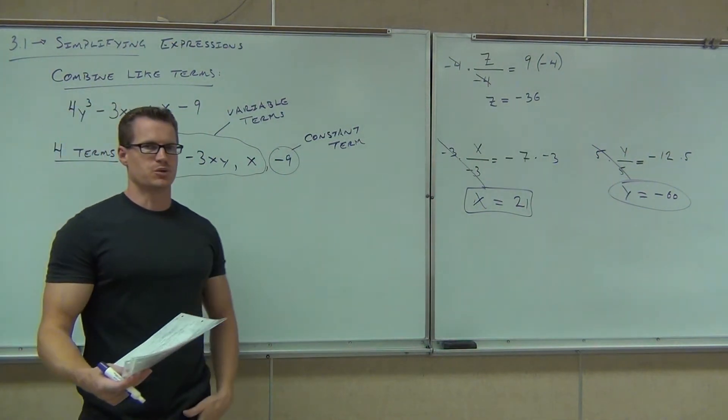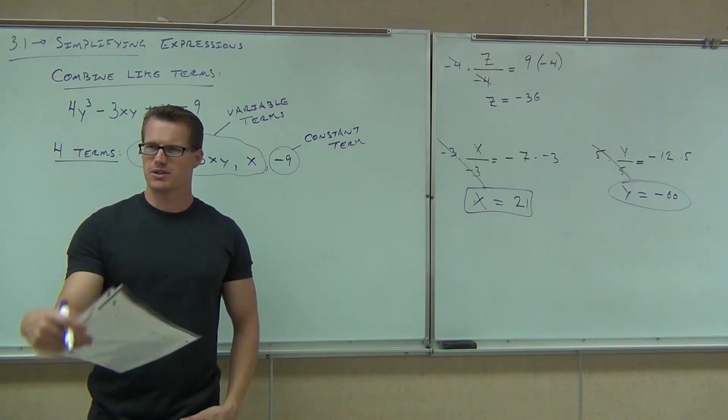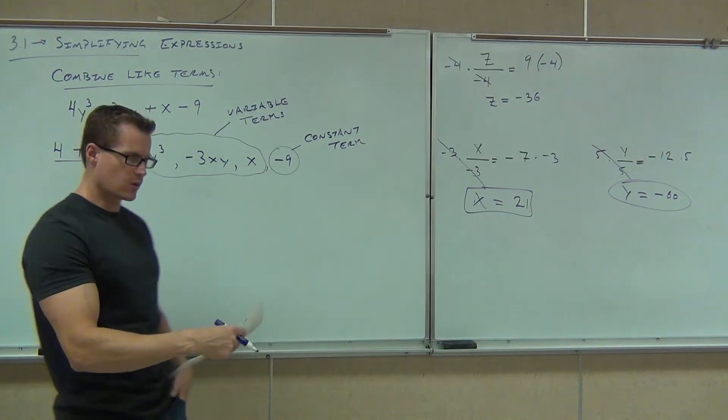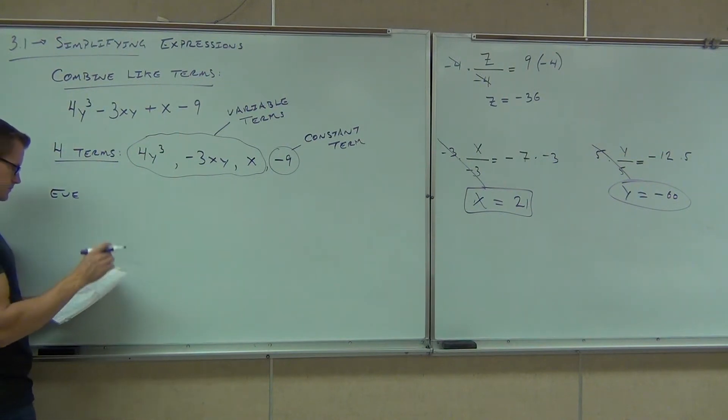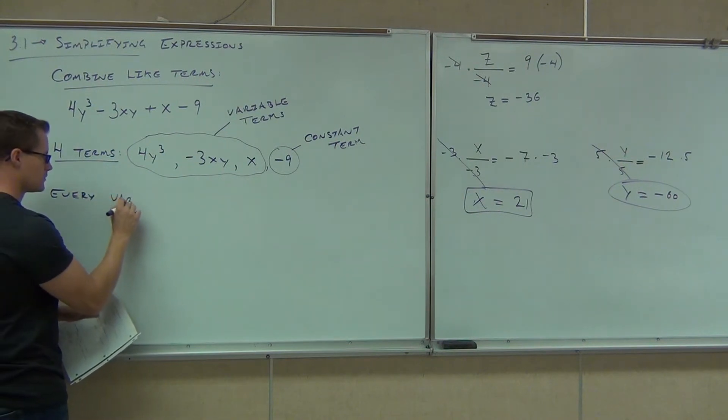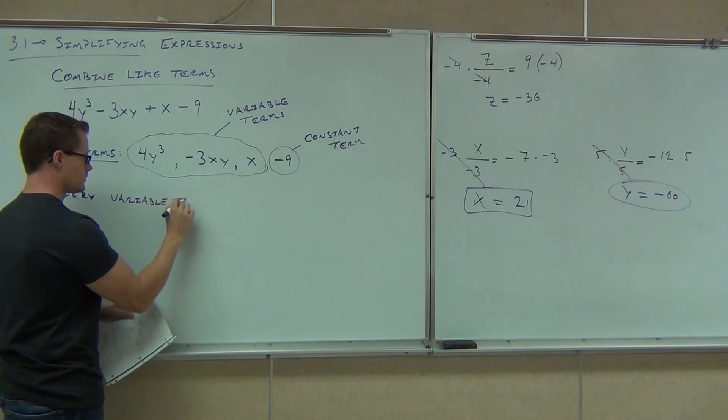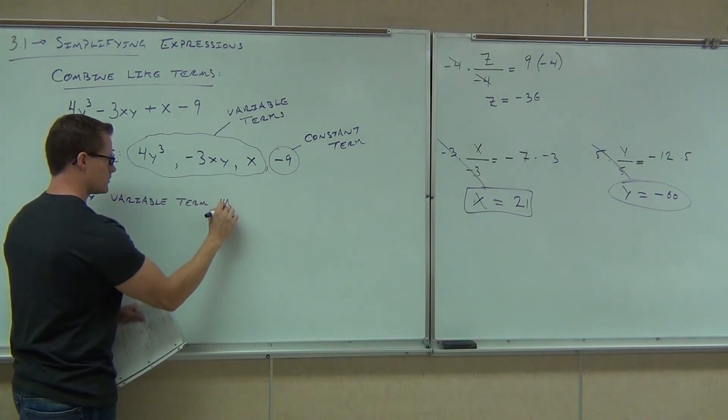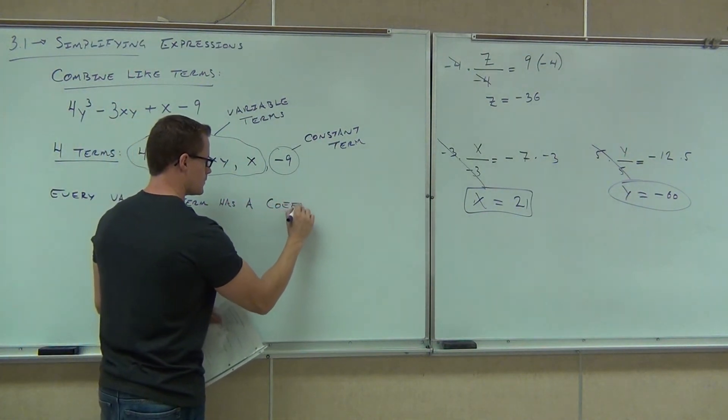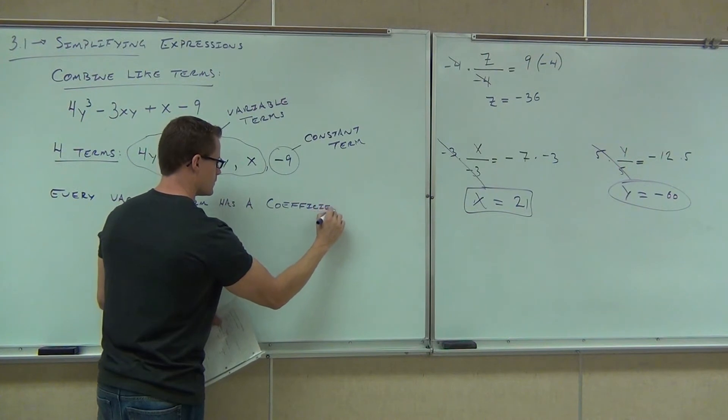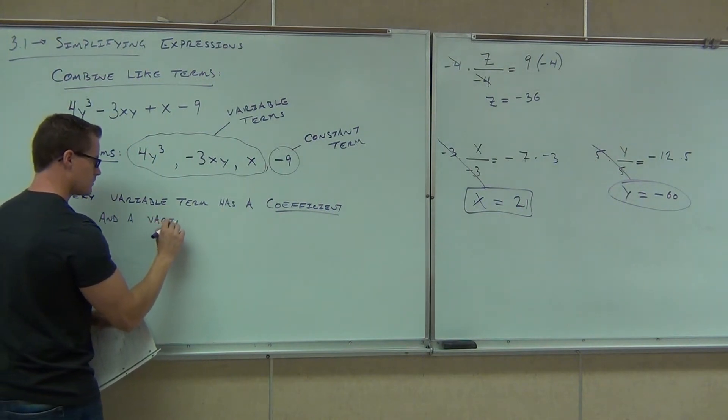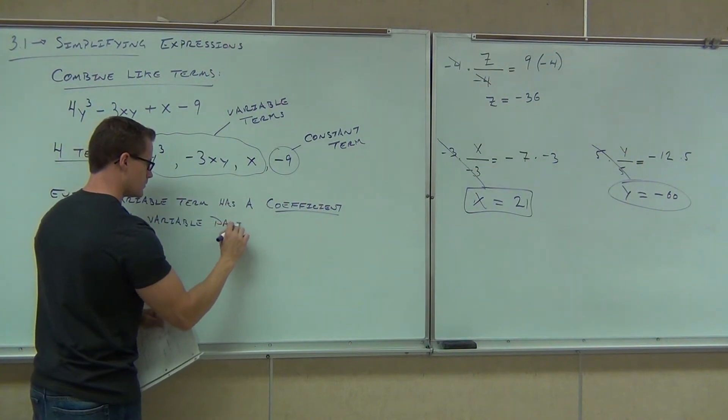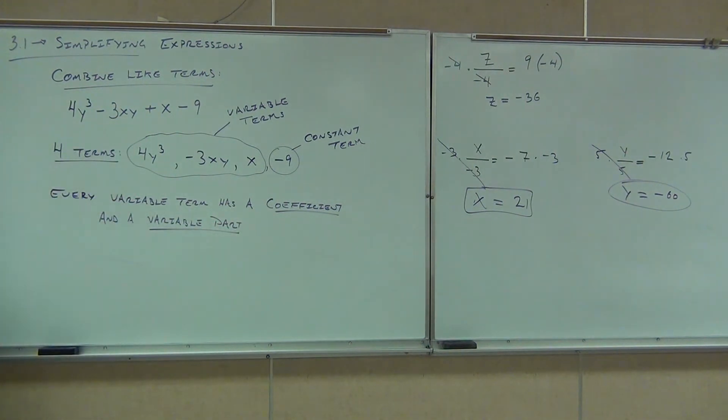Constant terms are just constant terms. There's not much we can really say about them, but we can say a couple things about our variable terms. Every variable term has a couple parts to it. There's the coefficient and there's the variable. Say coefficient for me. Coefficient. Good. Yeah, we need to pronounce that correctly. Coefficient. Every variable term has two parts to it. The coefficient and what's called the variable part.